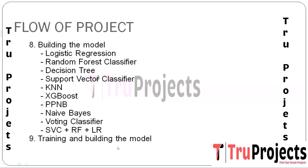Once models are selected, the next step is to train them on labeled training data. Training involves feeding the models with input features — processed and vectorized text — along with corresponding labels, and adjusting model parameters to learn patterns in the data. This process is iterative and involves optimizing the model for better predictive performance.